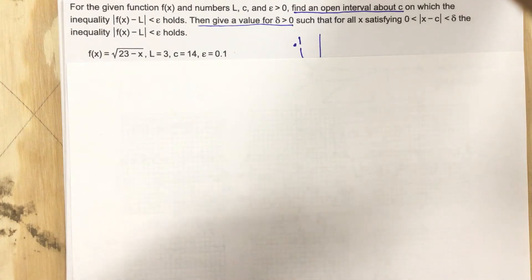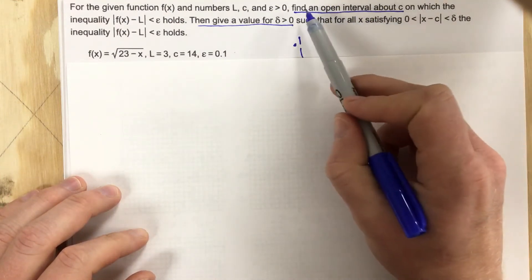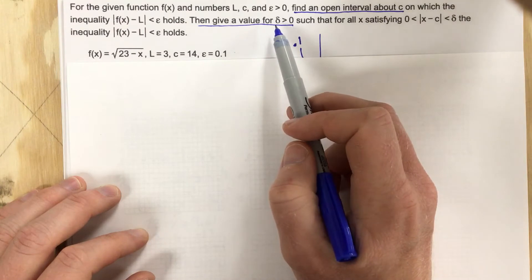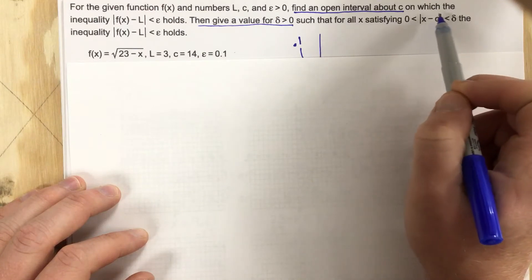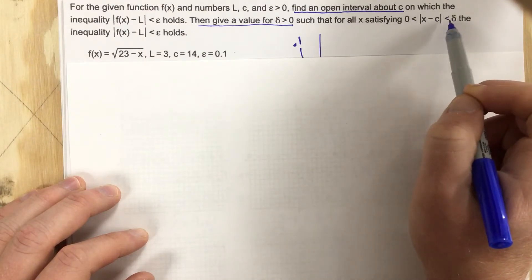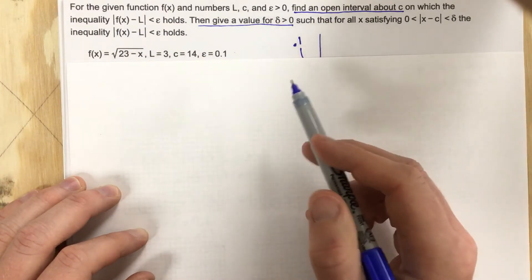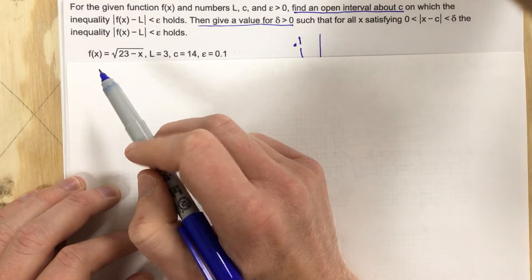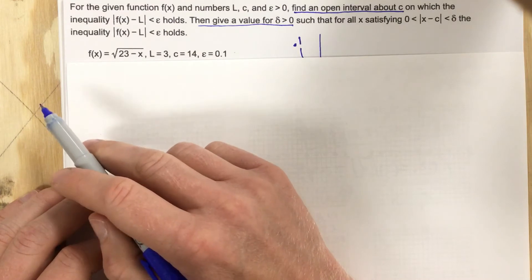To start this problem, we want to identify what they want us to find. First, they want us to find an open interval about c. Then they want us to find a delta such that all the x values satisfying this absolute value condition make it so that the y values are less than the tolerance. Long story short, we want the y values to be less than a certain tolerance, and we want the x values to produce y values within that tolerance. We have to start with the y values first.